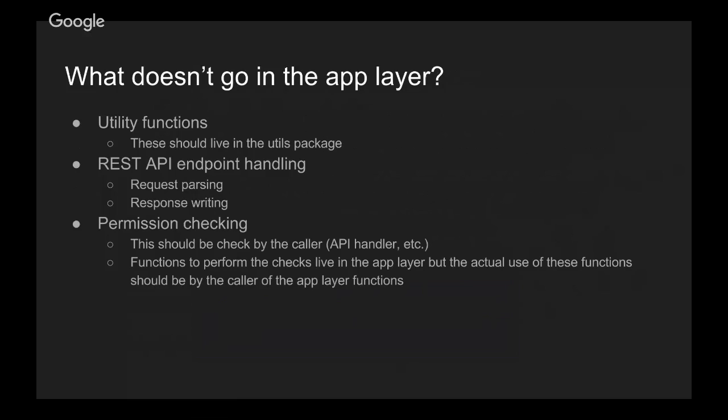So what doesn't go in the app layer? Utility functions — these should live in the utils package. If it's more of a helper function and doesn't affect application state, it doesn't really belong in the app layer, with some exceptions for utilities that need access to something in the application layer. Another thing that shouldn't go in the app layer is REST API endpoint handling — specifically request parsing and response writing. While some code might be shared between API version 3 and version 4, we should keep that separate or in a common API package, as it doesn't really belong in the app layer.